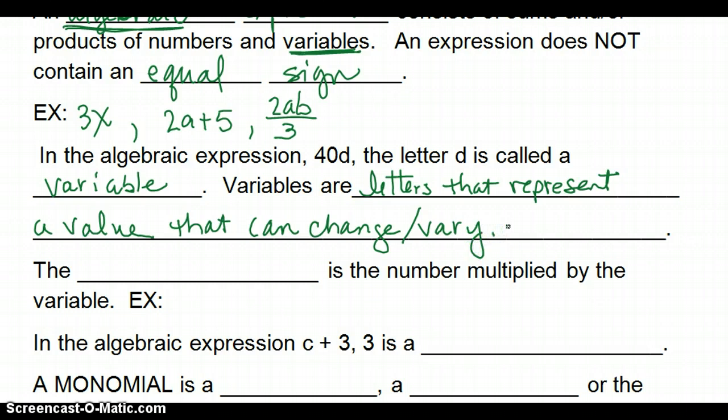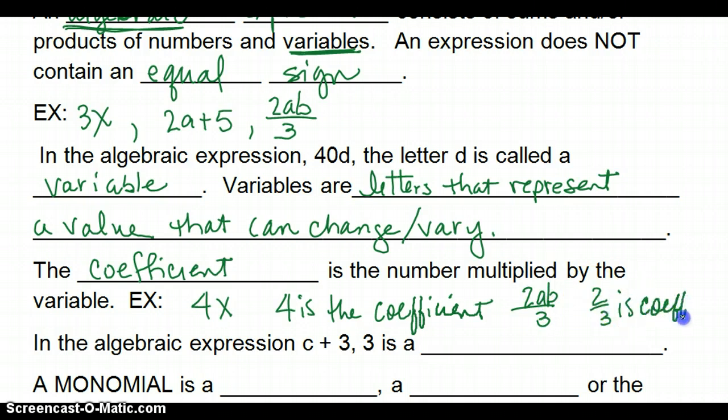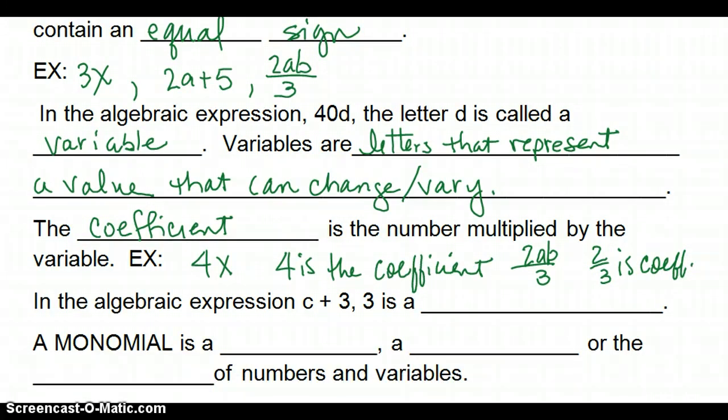The coefficient is the number multiplied by the variable. So, in the expression 4x, 4 is the coefficient. In the number that we had above, 2ab over 3, 2 thirds is the coefficient. 2 thirds is a number, don't forget. It's just a fraction. It's a rational number.